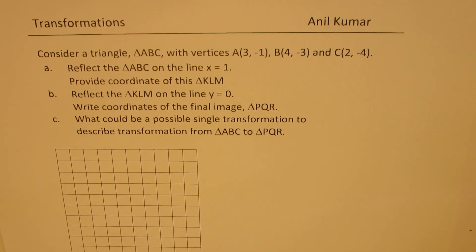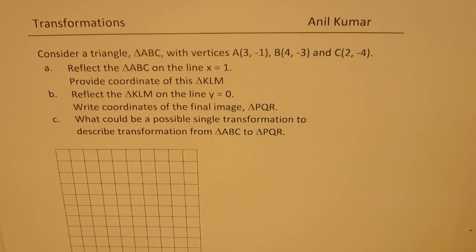I am Adil Kumar sharing with you a very important question based on reflection of objects. The question is: consider a triangle ABC with vertices A(3,-1), B(4,-3), and C(2,-4). Reflect the triangle ABC on the line x equals 1 and provide the coordinates of triangle KLM. Then reflect triangle KLM on the line y equals 0 and write the coordinates of the final image, triangle PQR. What could be a possible single transformation to describe the transformation from triangle ABC to triangle PQR?